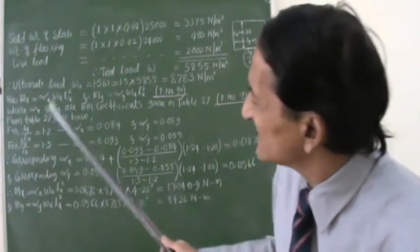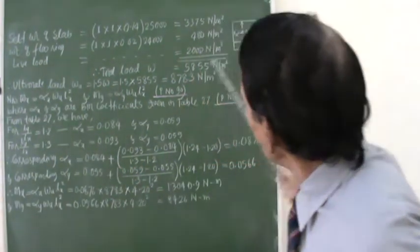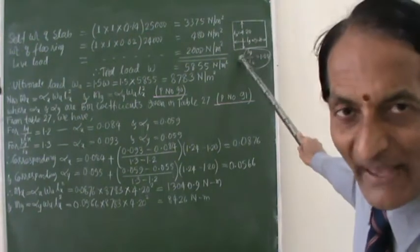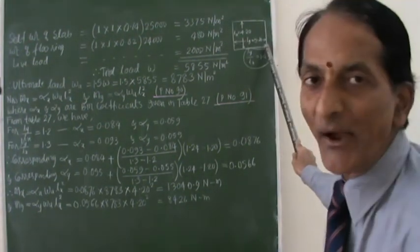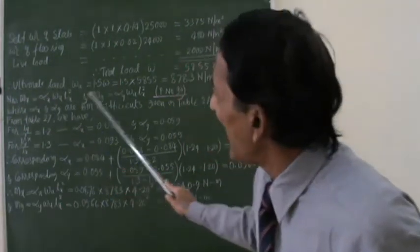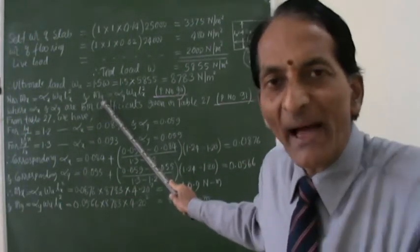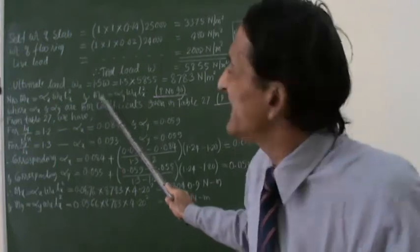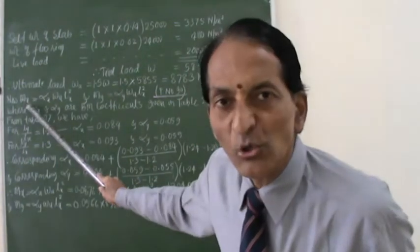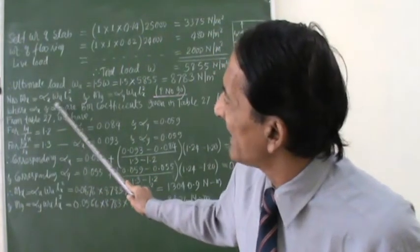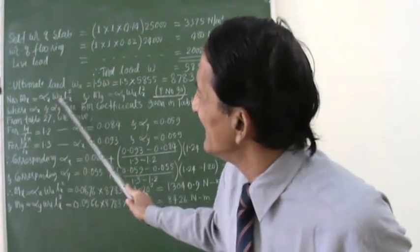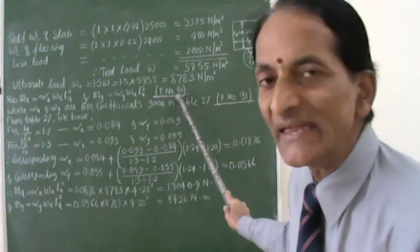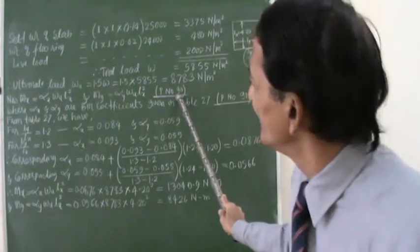See now, what the IS code says is, bending moment in the shorter span, Mx, and bending moment in the longer span, My, are given by some equations. The equation is Mx is equal to alpha x wu Lx squared. This is the equation given on page number 90. I will show you afterwards.